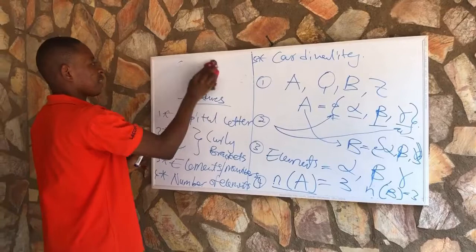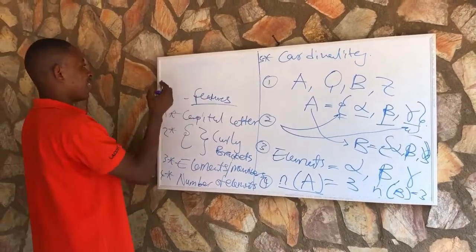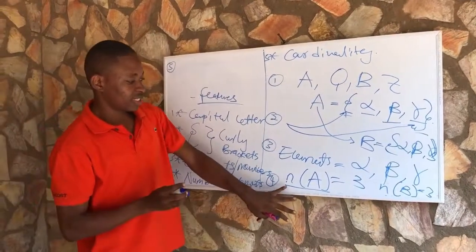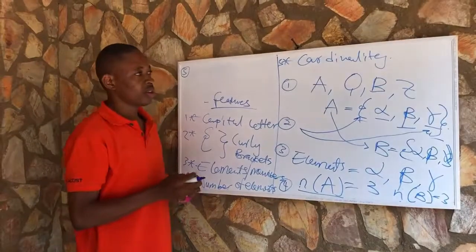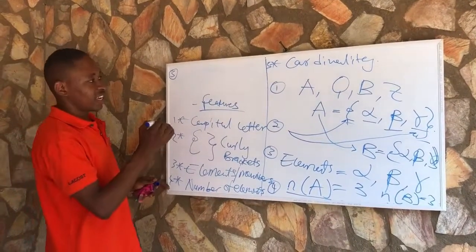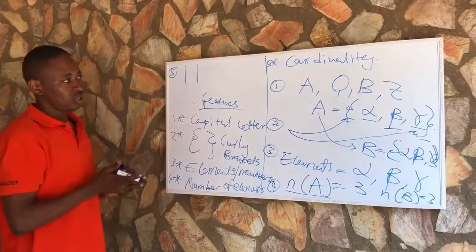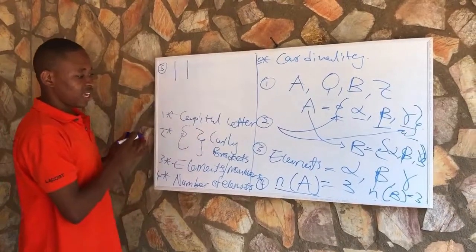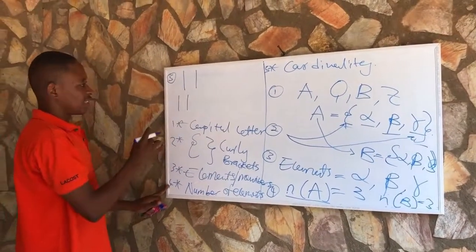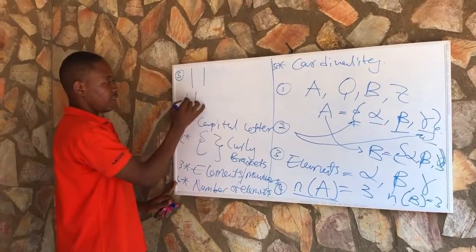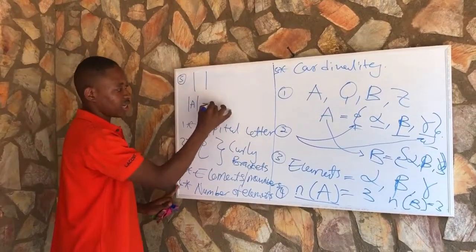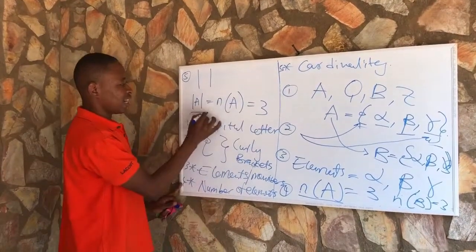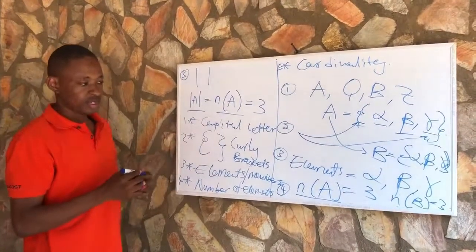The fifth item is cardinality. Cardinality is the same as the number of elements of a set, and cardinality is represented by the double bar notation. So from this set we can say that the cardinality of set A is equal to the number of elements in set A, which is equal to three, because cardinality and number of elements are the same.